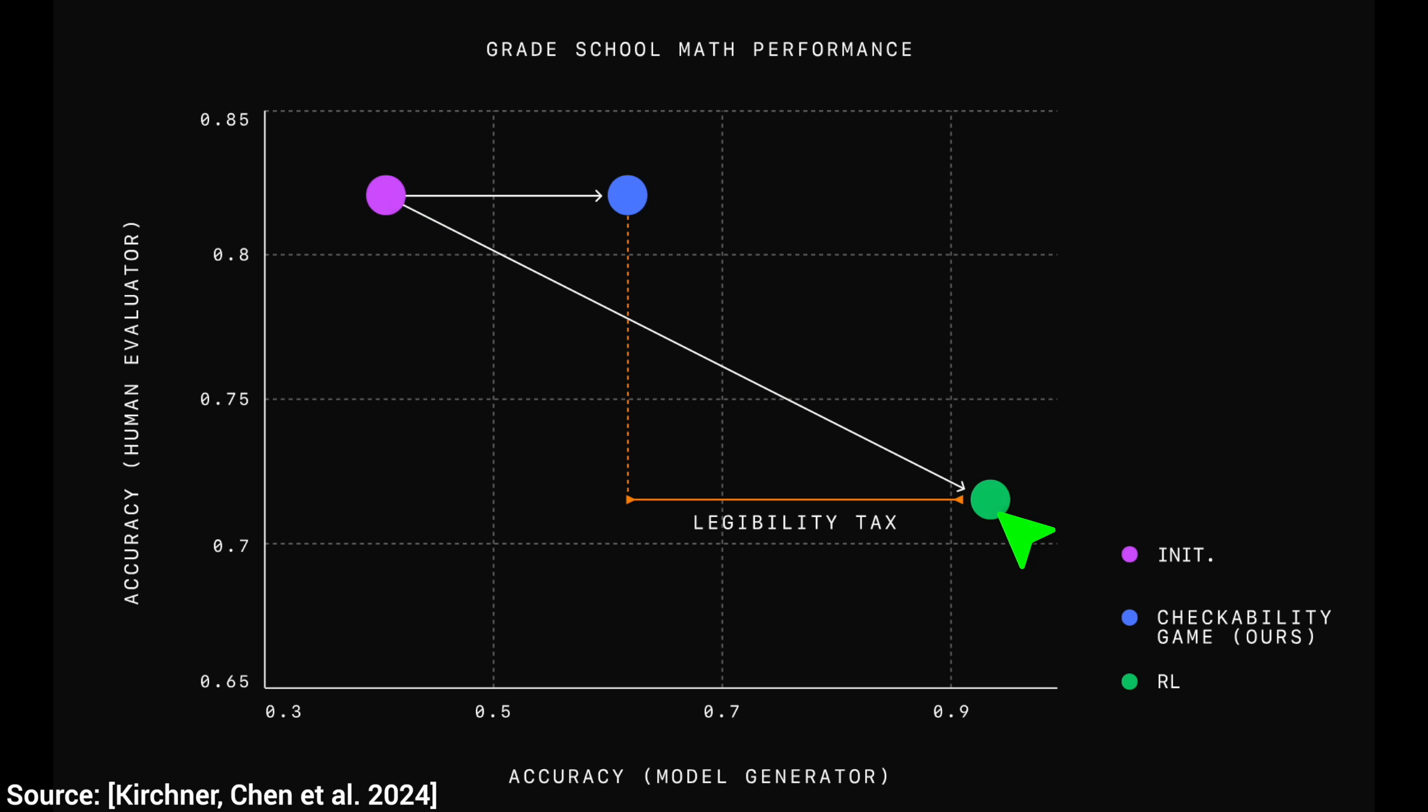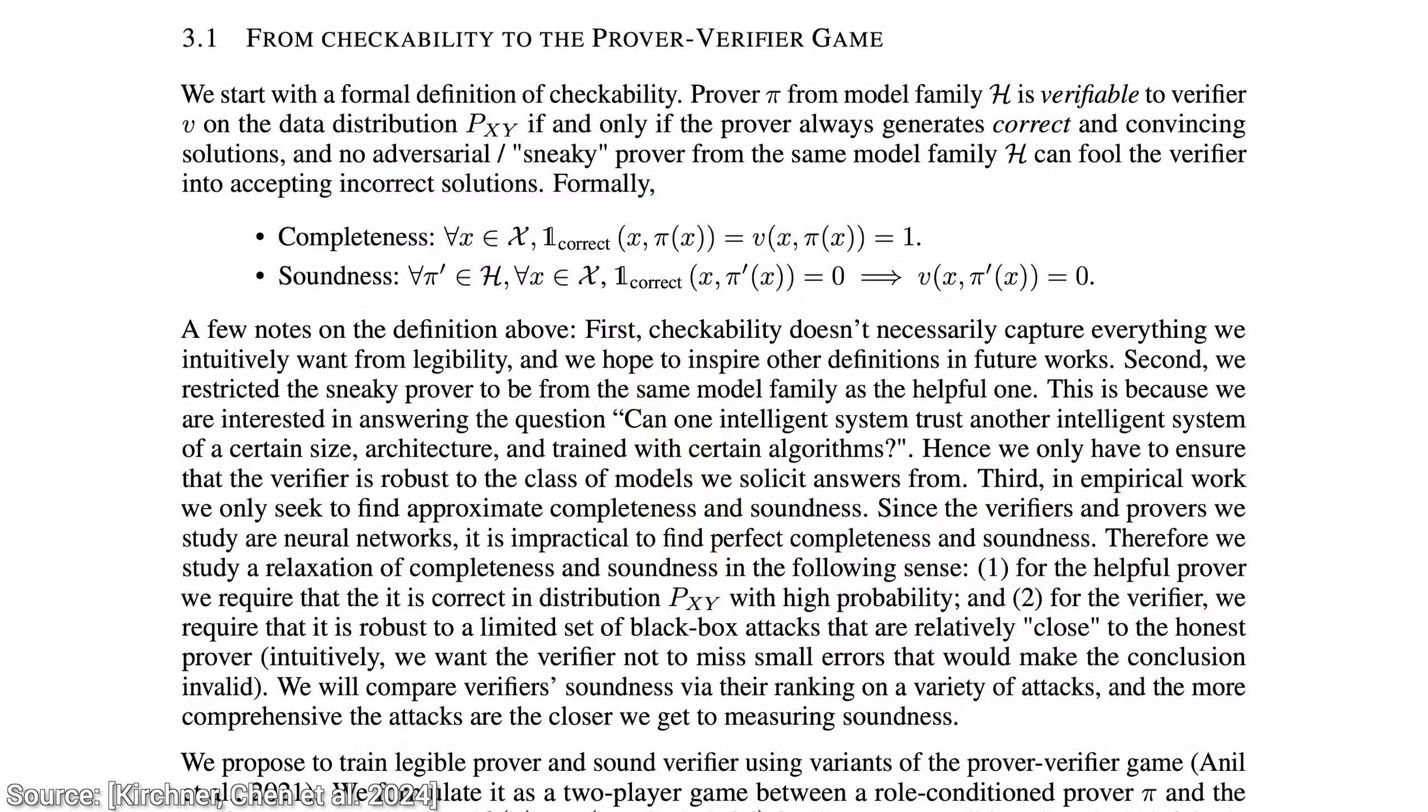If we improve this model to be smarter, it gets smarter. Fantastic! But the price for being so smart is being less understandable. Huge performance comes at the cost of poor understandability. And now, with the new technique, we can make a model smarter without paying this huge legibility tax on it.